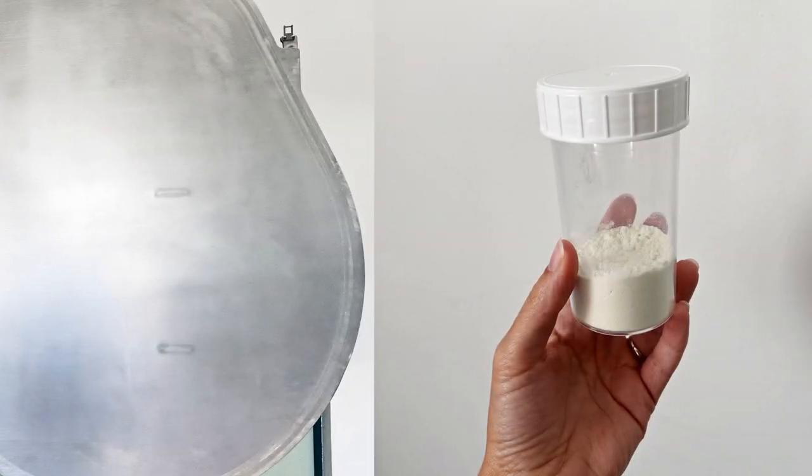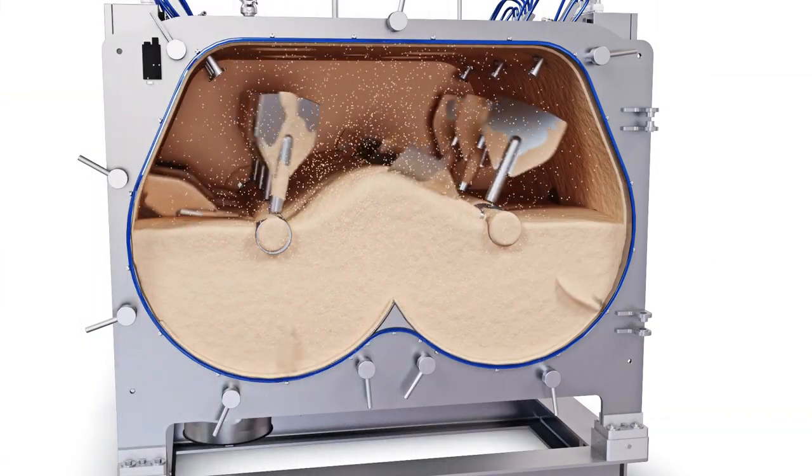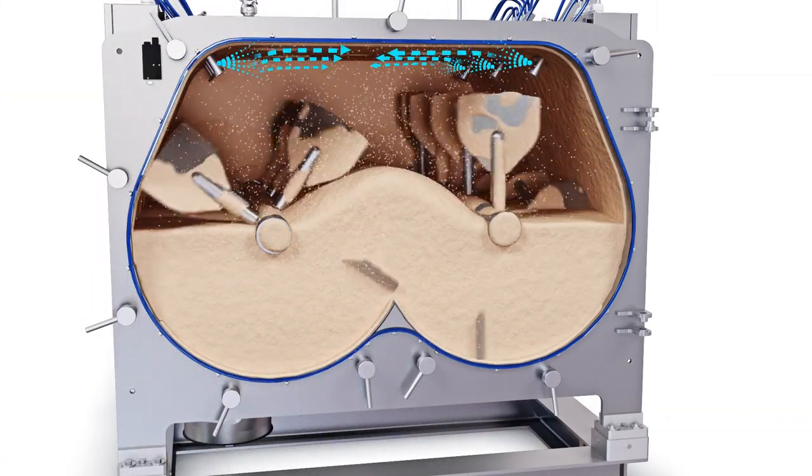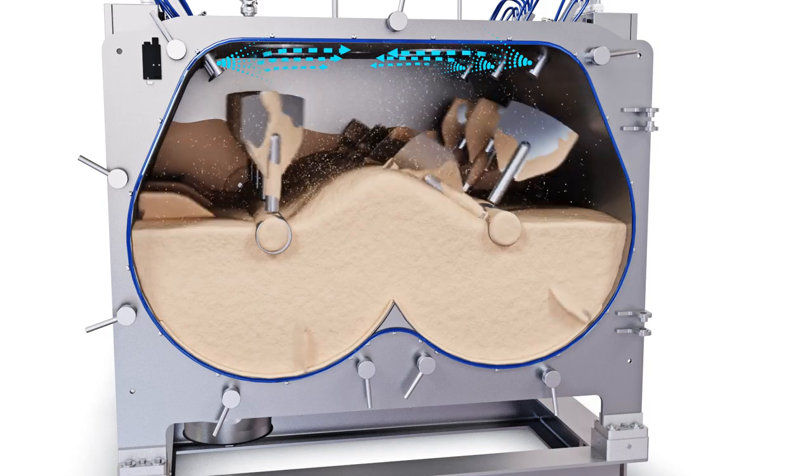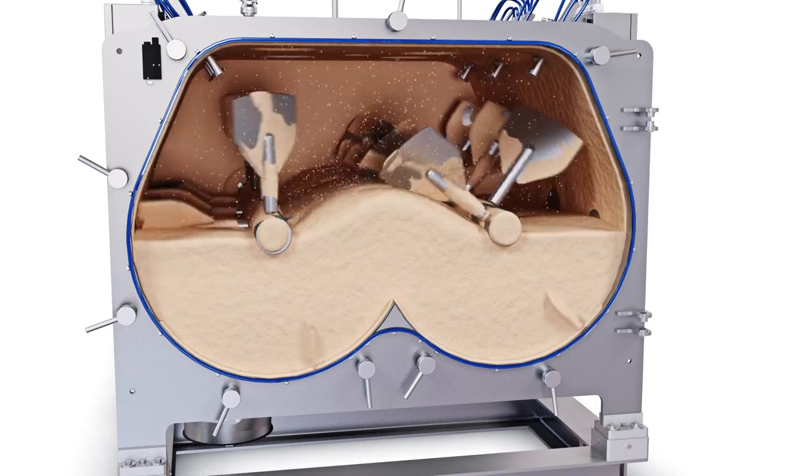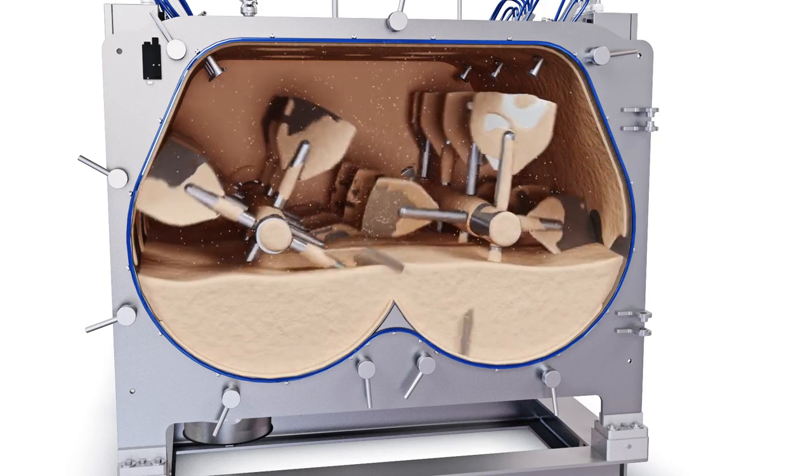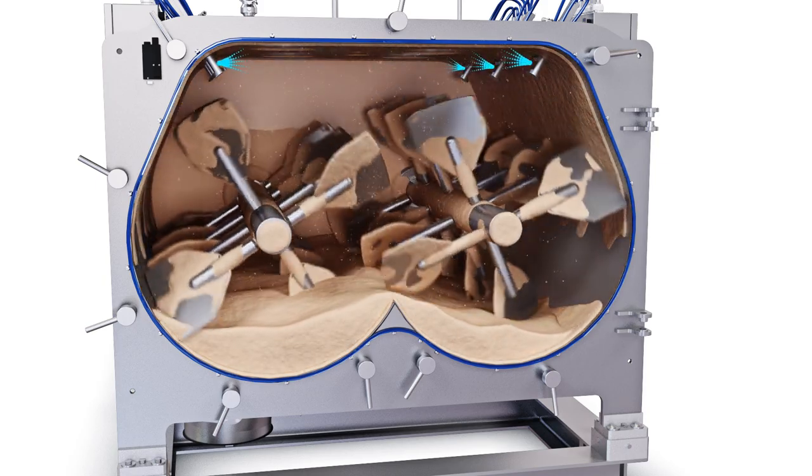You can also use the system briefly during the mixing cycle for flushing to avoid the build-up of powder on the ceiling. Flushing can also be used to improve discharge and help reduce powder losses.